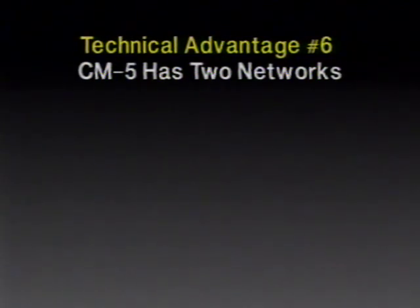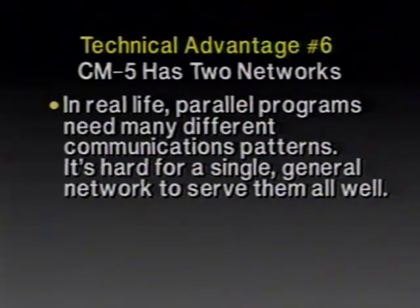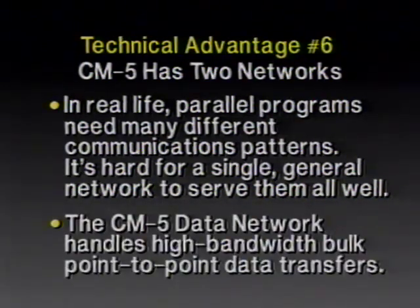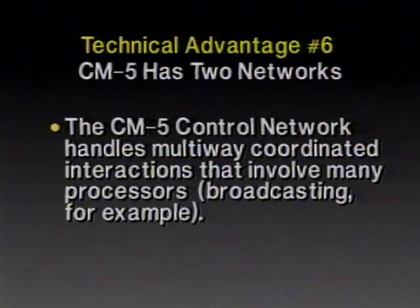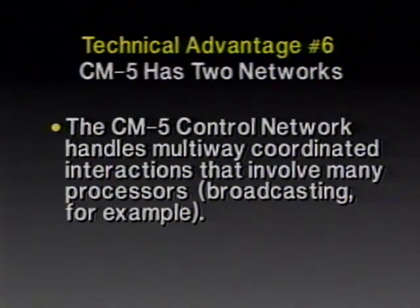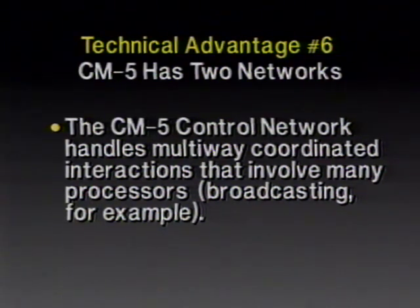The networks scale in length so you can connect thousands or tens of thousands of things, and as they scale in length, they scale in width to match — so the amount of bandwidth provided to each network port is a constant. Every processing node or I/O device connected to the network is guaranteed five megabytes per second per network address used by that item. This is a significant technical achievement because big systems are not going to find the network to be a bottleneck. Technical advantage number 6: the CM5 has two networks. Other machines have usually tried to use a single communications network to solve all the communications problems, but there are different kinds of communications calling for very different hardware solutions.